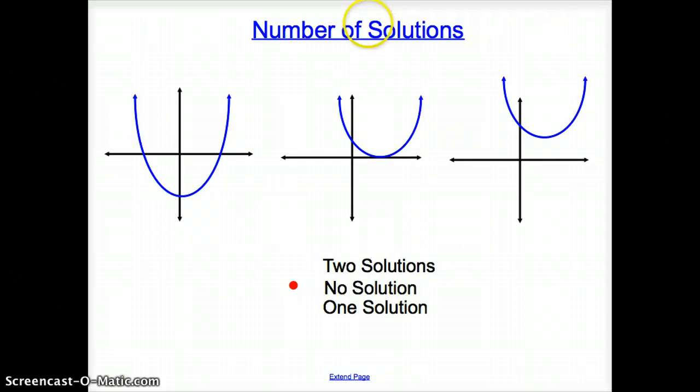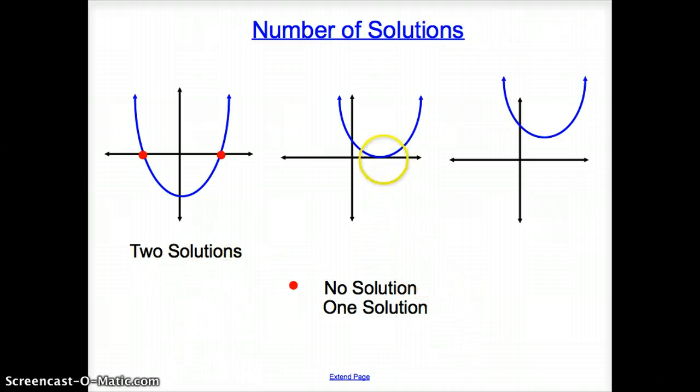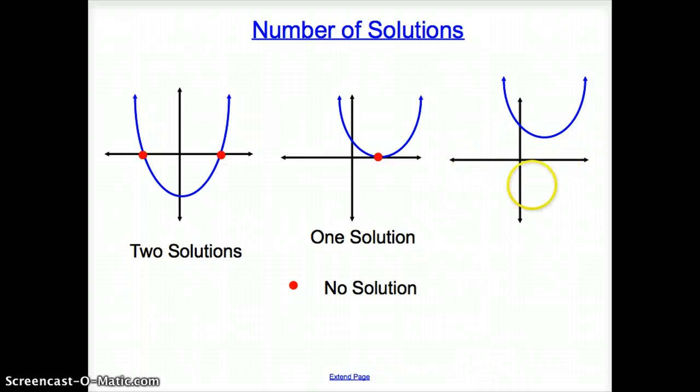Now, numbers of solutions. We will get a different number of solutions on some problems. This parabola intersects the x-axis at two different spots, so we have two solutions. This graph goes through the x-intercept just once, so it has one solution. Does this graph go through the x-axis? No, it does not. So just like the previous example, this has no solution.